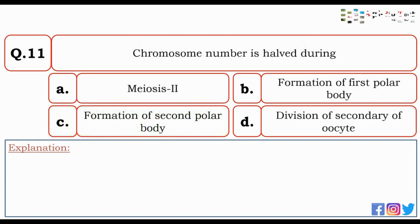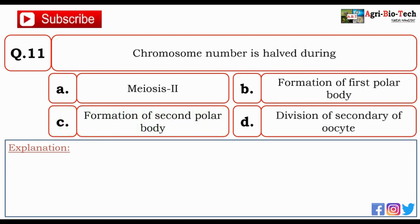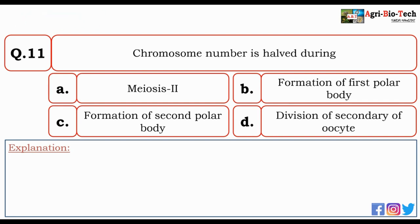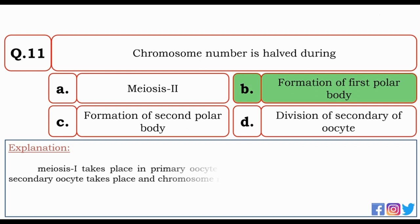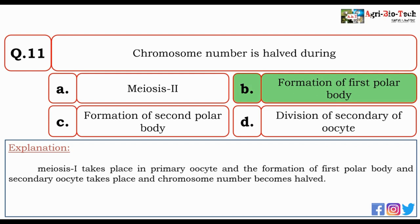Next question: chromosome number is halved during — meiosis II, formation of first polar body, formation of second polar body, or division of secondary oocytes? The correct option is B — formation of first polar body. Meiosis I takes place in the primary oocyte, and during formation of the first polar body and secondary oocyte, the chromosome number becomes halved.